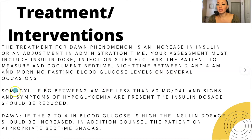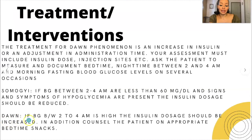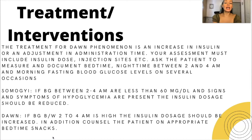For the Somogyi effect: if blood glucose levels between 2 and 4 in the morning are less than 60 mg/dL and signs and symptoms of hypoglycemia are present, the insulin dosage should be reduced. For the Dawn phenomenon: if blood glucose between 2 and 4 in the morning is high, the insulin dosage should be increased — also counsel the patient on appropriate bedtime snacks. If it's crashing down in the middle of the night, that's the Somogyi effect — it has a Y, it yo-yos down. If their blood glucose steadily rises all night and it's 400 at 2 to 4 a.m. and 600 at waking, clearly we need to increase their insulin.